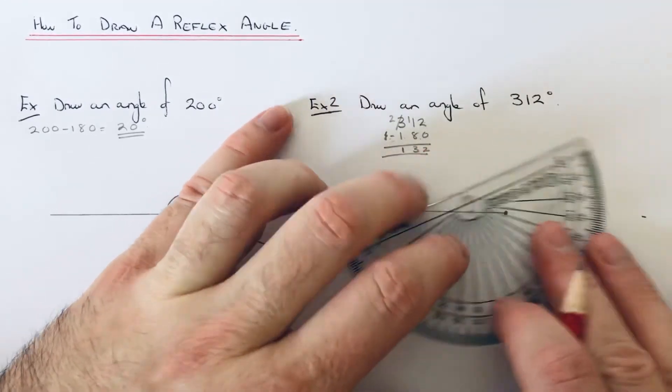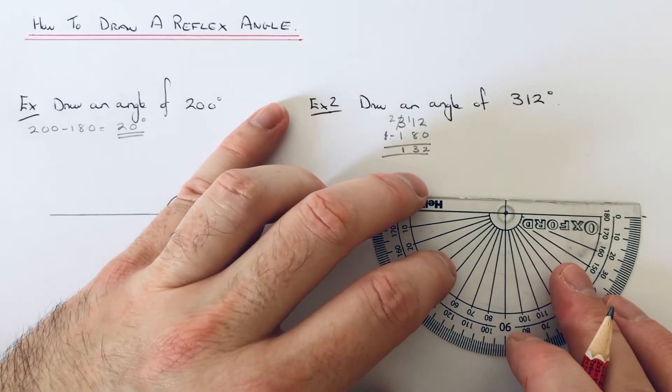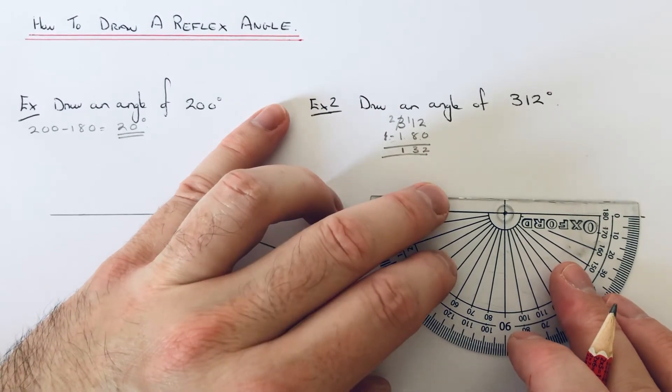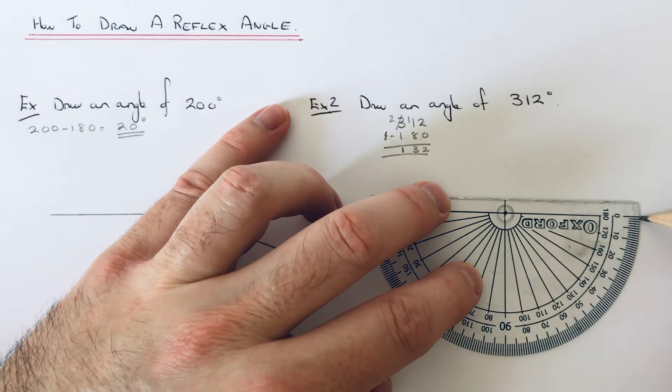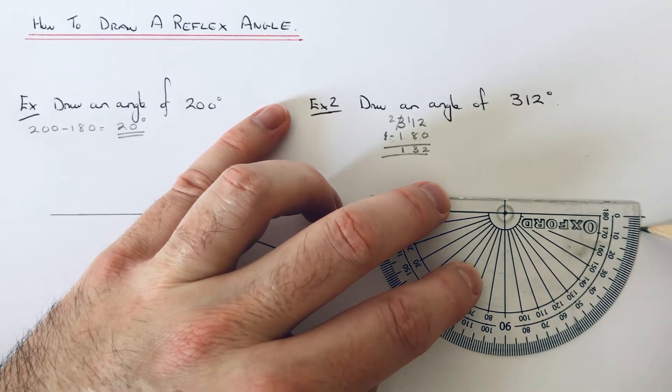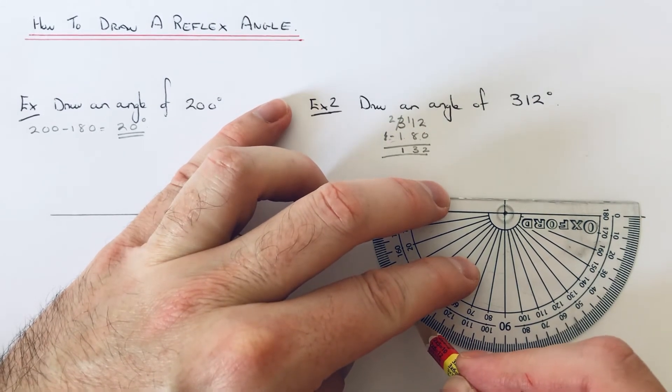Remember where we had our protractor like that to start off with, if we spin it around like that, we've got to measure an extra 132 on from that zero, which is here.